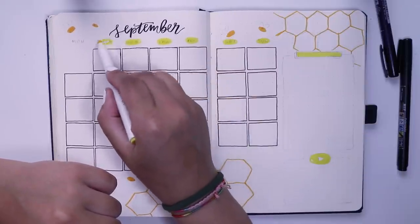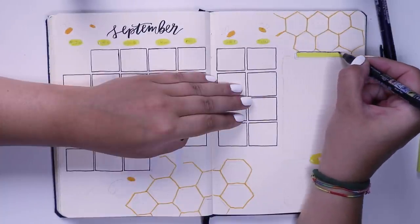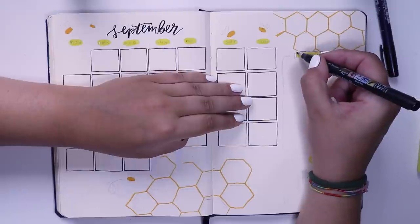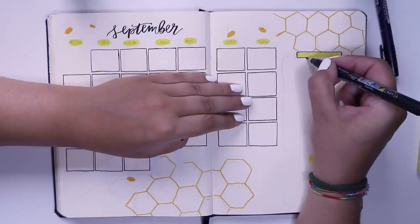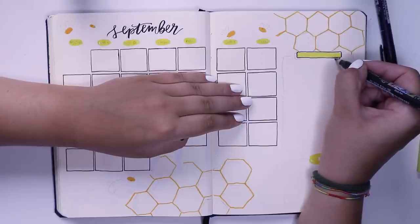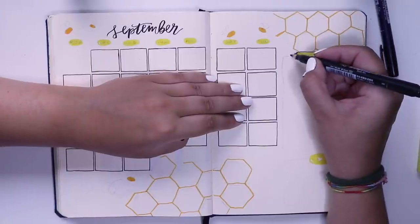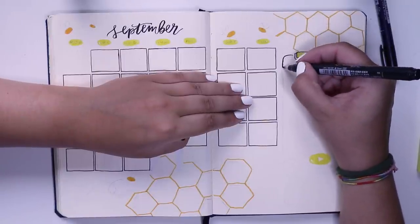For this month, I did a lot of this style of drawing a box with a little shadow, but a not filled in shadow. It'll become more clear what I mean once I actually get to my weekly spread. I just kind of did that for most of the things in this month's spreads.